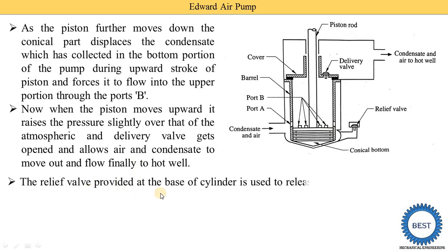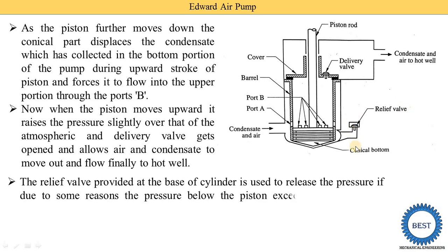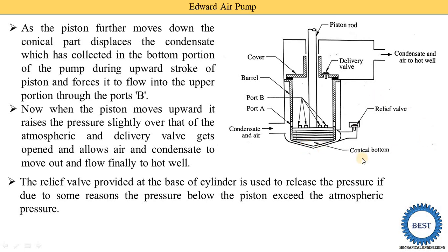A relief valve is provided at the base of the cylinder, as shown here. This relief valve is used to release pressure if, for some reason, the pressure below the piston exceeds atmospheric pressure. When the pressure of condensate and air below the piston rises above atmospheric pressure, this relief valve opens and releases the condensate and air to the atmosphere.